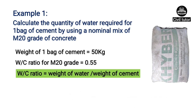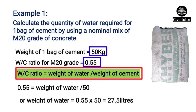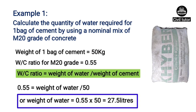As we know, water cement ratio is equal to weight of water upon weight of cement. The water cement ratio is given as 0.55 and the weight of cement is equal to 50 kg. So on substituting these values in the equation, we will get the weight of water equal to 27.5 liters, which means the quantity of water required for one bag of cement by using a nominal mix of M20 grade of concrete is 27.5 liters.